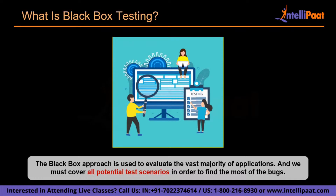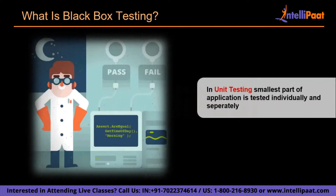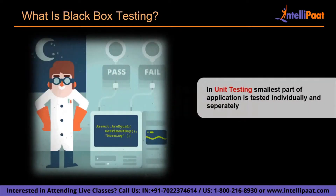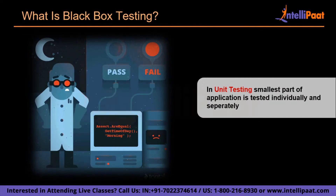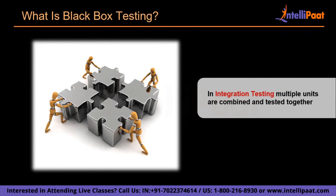Black box testing takes place at several phases of the software development and testing life cycle, including unit, integration, system, acceptance, and regression testing. In unit testing, the smallest part of an application is tested individually and independently. Whereas in integration testing, multiple individual units are tested together in tandem.